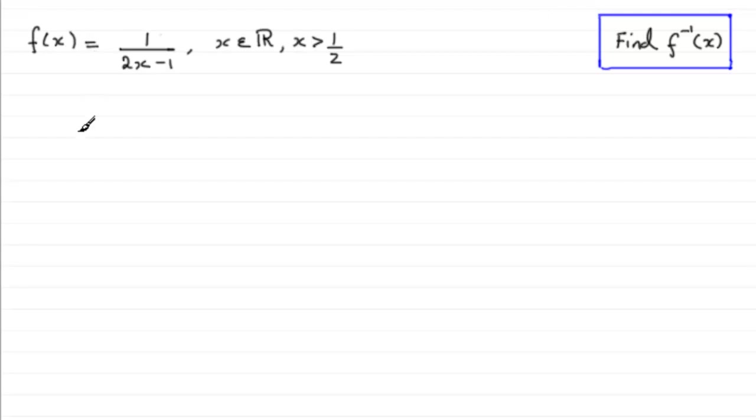To do questions like this, what I'd encourage you to do is to say let x equal, we change this to an x and wherever you have x's on this side of your equation, turn them to y's. So we've got 1 over 2y minus 1. And what we need to do is to make y the subject, so rearrange it, make y the subject.